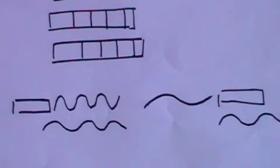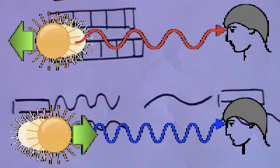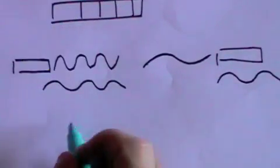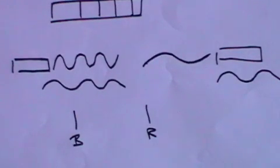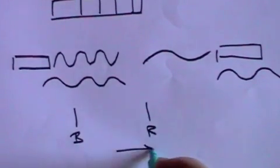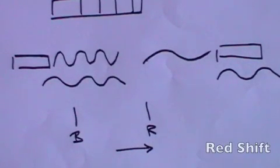So too with light. A light source moving away from you will show a lower frequency. A light source moving towards you will show a higher frequency. Now blue light has a higher frequency than red light. So if a light source has a lower frequency, in other words it's going away from you, then it will shift towards the red end. We call that a red shift.